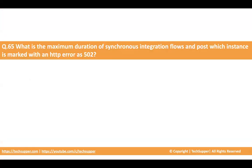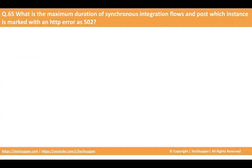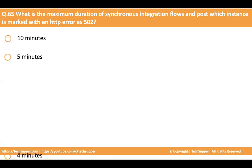The next question is: what is the maximum duration of synchronous integration flows, after which the instance is marked with an HTTP error 502? Synchronous integration — like a REST API where you send a GET or POST request and wait for an immediate response — has a timeout limit. The options are 10 minutes, 5 minutes, 4 minutes, and 6 minutes.